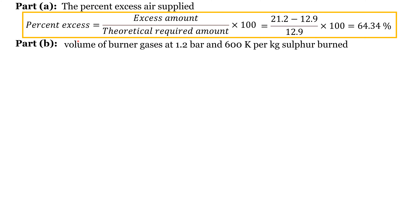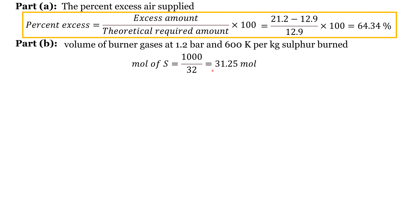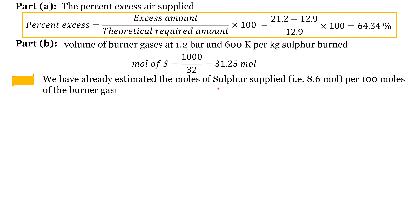For part B, we need to find the volume of burner gases at 1.2 bar and 300 Kelvin per 1 kg sulfur burned. In the previous case we assumed 100 moles of burner gas. Here the amount of sulfur is already given, so first we find the moles of sulfur. Moles of sulfur = 1000 g / molecular weight = 31.25 moles.